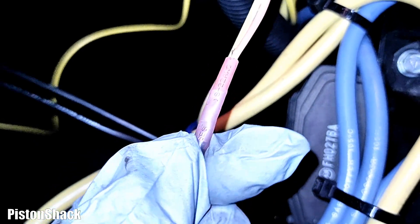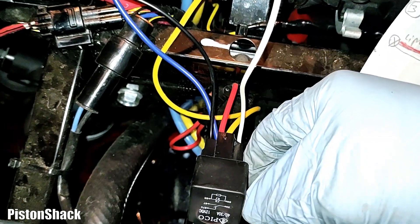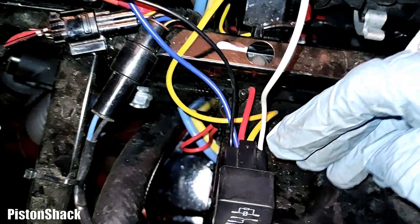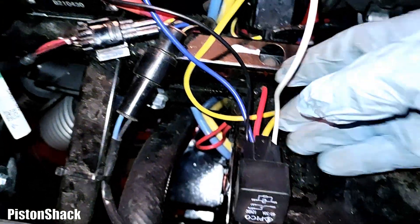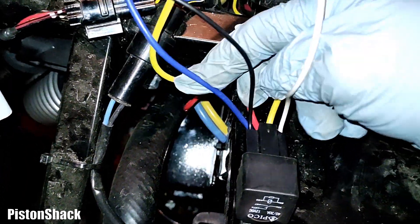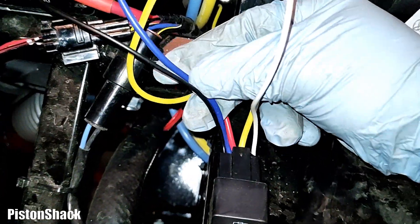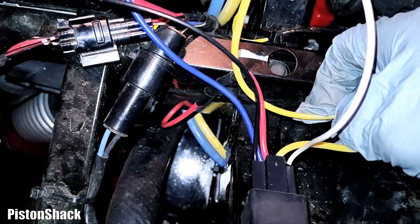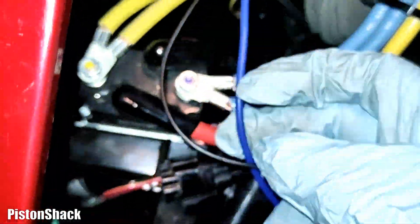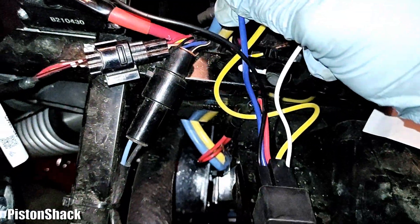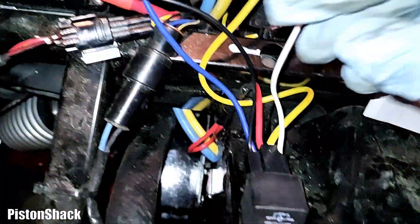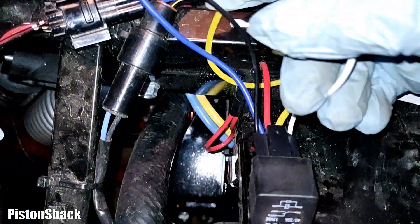Here's the relay and how it looks in place. We have two thicker wires as our load side, and this wire is going down to the battery positive terminal through the fuse. Another end is going to our light.